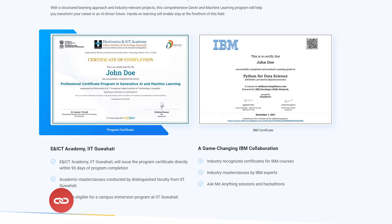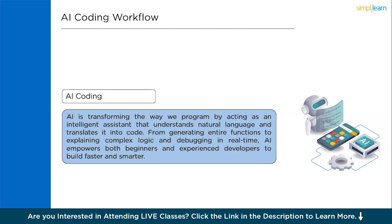Now, without further delay, let's get started. AI is transforming the way we program by acting as an intelligent assistant that understands natural language and translates it into code. From generating entire functions to explaining complex logic and debugging in real time, AI empowers both beginners and experienced developers to build faster and smarter. It's like having a coding expert available 24/7 right inside your editor.